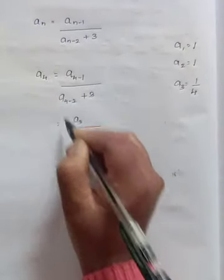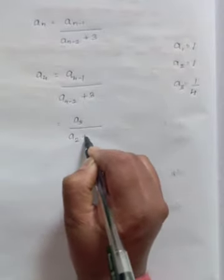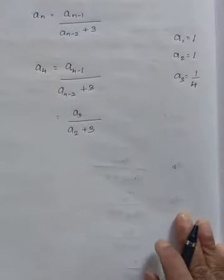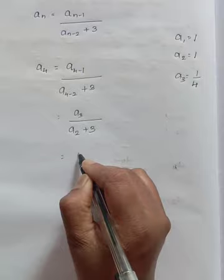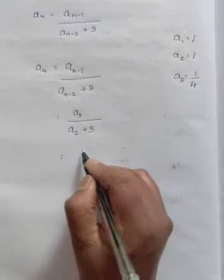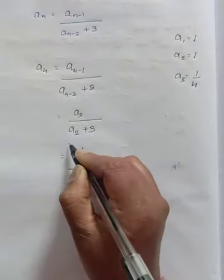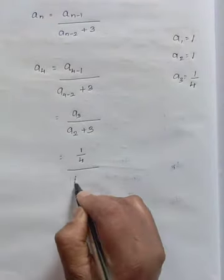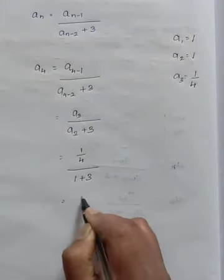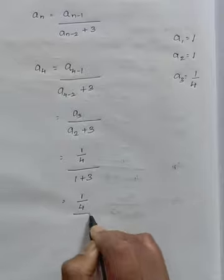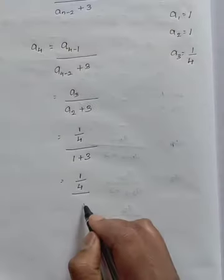That is A base 3 by A2 plus 3. We know that A3 value is 1 by 4, 1 by 4 divided by A2 value is 1 plus 3. That is 1 by 4 divided by 3 plus 1 is 4.